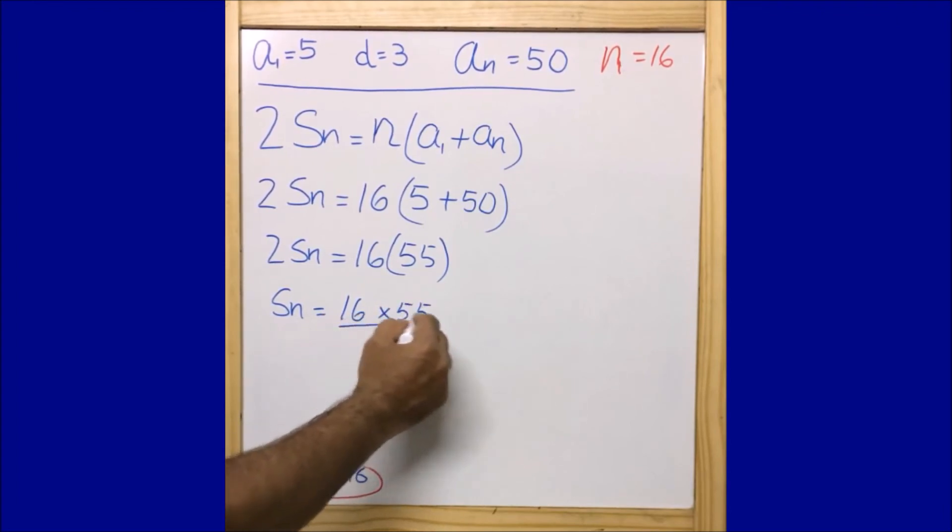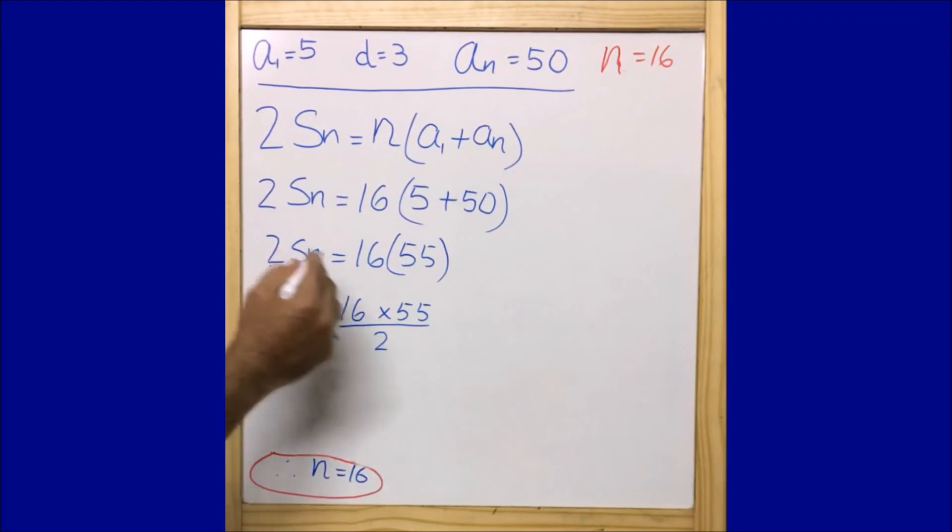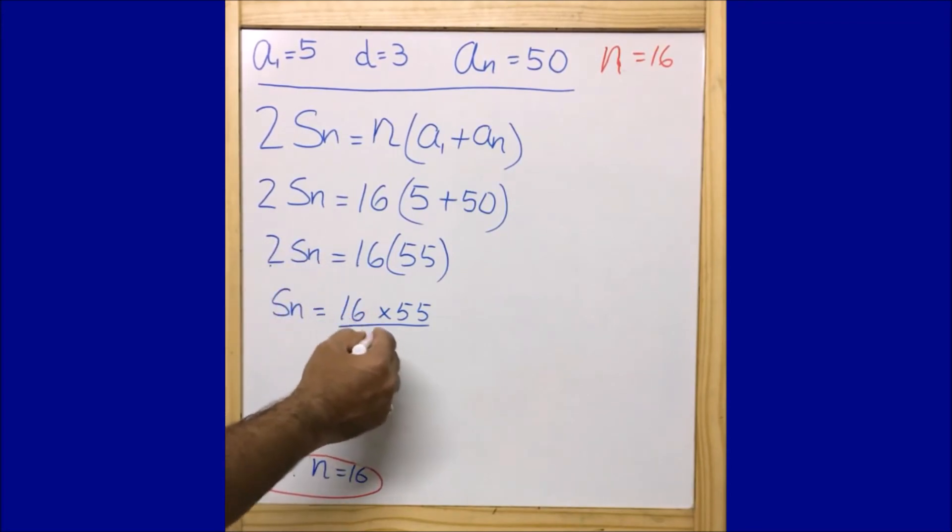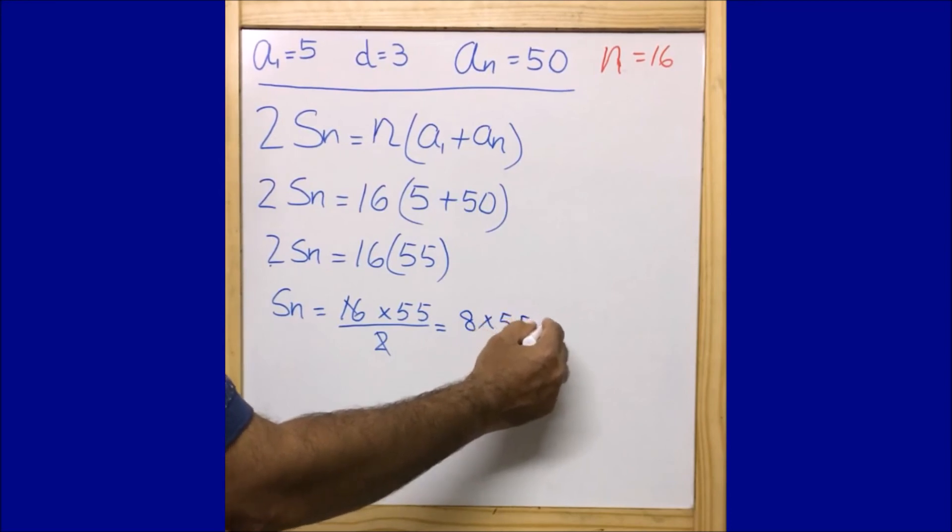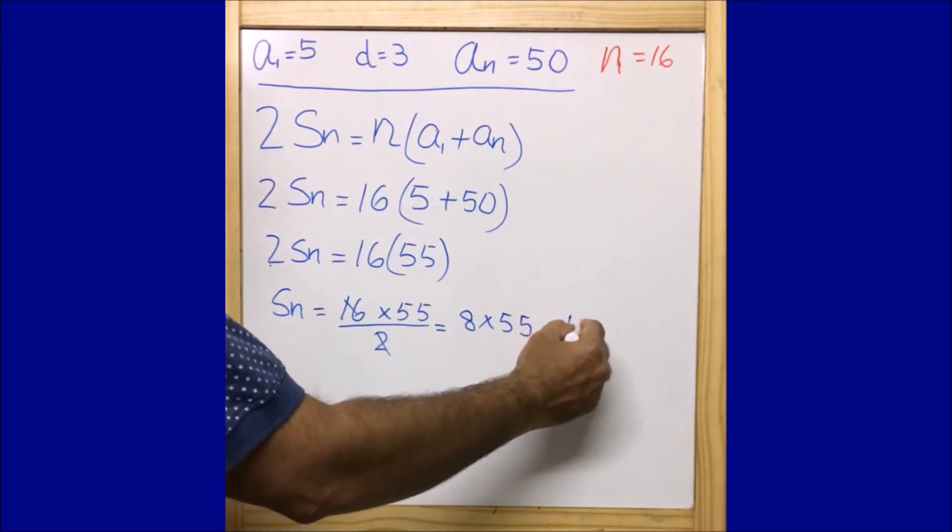Dividing by 2, this 2 will cancel off and I'm getting 8 times 55, that equals 440.